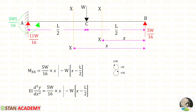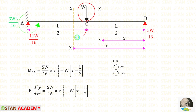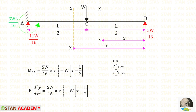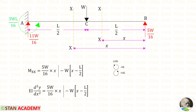Now let us find the moment in the sections, calculating from point B moving left where clockwise is negative and anti-clockwise is positive. The reaction RB is anti-clockwise, so positive with distance x: 5W/16 into x. Load W is clockwise, so negative, with distance x minus L/2. This equation is separated by a dotted line: up to distance L/2 only the first term applies; beyond L/2 both terms apply. We know that Mxx equals EI d²y/dx².